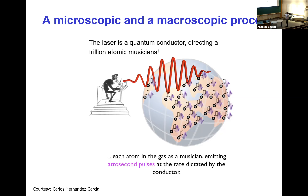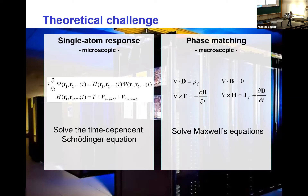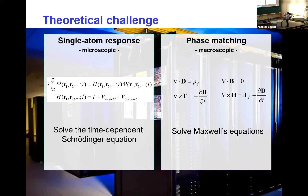Now let me talk about the theory. What is the theoretical challenge in modeling this process? There are two different processes to consider: the microscopic process and the macroscopic process. The microscopic process is quantum mechanical — you have to solve the time-dependent Schrödinger equation. No analytical solutions exist, especially not in an intense laser field where the field-electron interaction and the electron-atom interaction are of similar strength. You can do approximate solutions, or nowadays solve this on the computer.